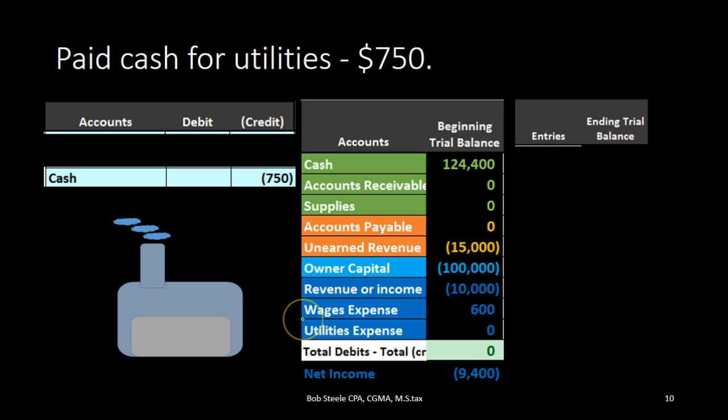Crediting cash — if we post that out, cash started at $124,400. We credited it $750, bringing the balance down to $123,650. If we credit cash, we're going to have to debit something because we need an equal number of debits and credits. What are we going to debit?